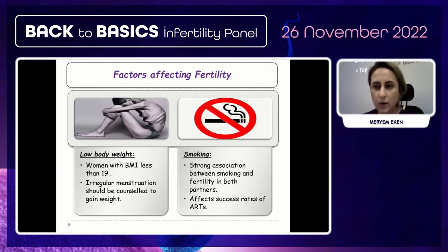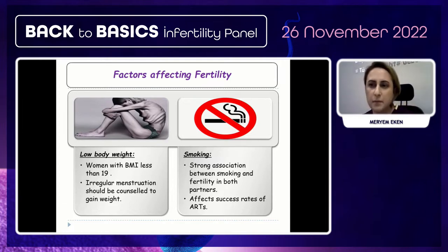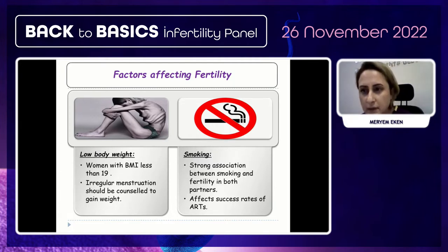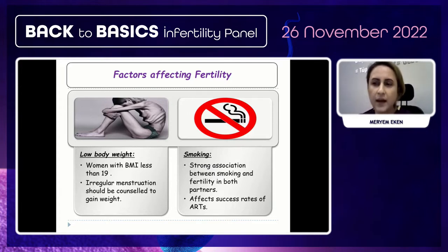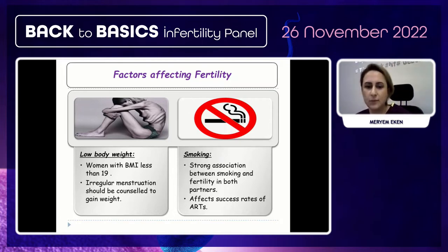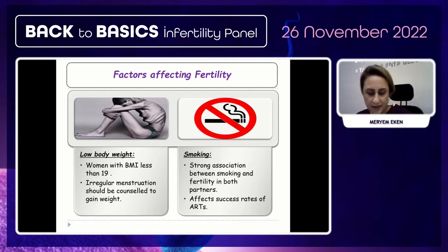A very low BMI is also a problem. Women with a BMI less than 19 experience irregular menstruation and should be counseled to gain weight. Another major global problem is smoking. There is a strong association between smoking and fertility in both partners, affecting the success rate of ART and also spontaneous pregnancy.